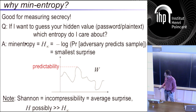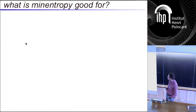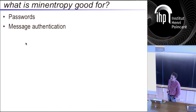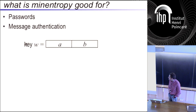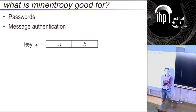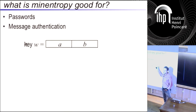Shannon entropy is average surprise, and min entropy is the smallest surprise — and that distinction is important. I want to talk a little bit about what min-entropy is good for. Here's a nice application to message authentication. Let's say the key for message authentication is a symmetric system. I want to authenticate a message to you. We both have this key w. Let's split it up into two parts, call them a and b — think of this as an n-bit key, each part is n over 2 bits, living in GF(2^{n/2}).